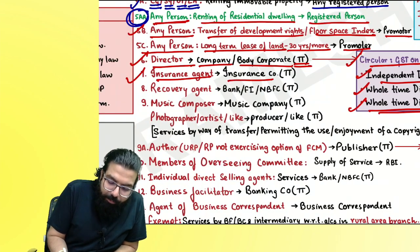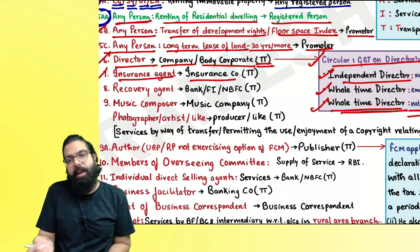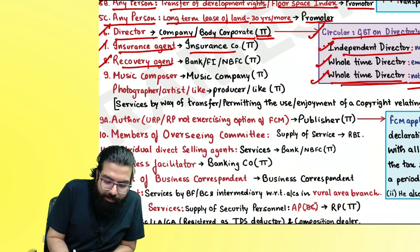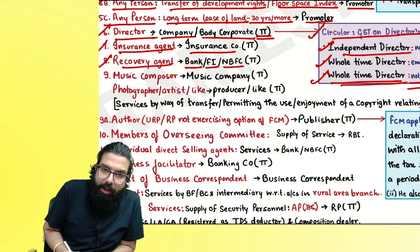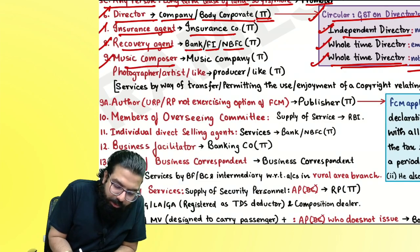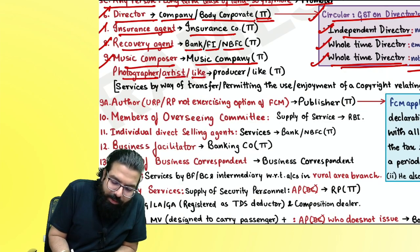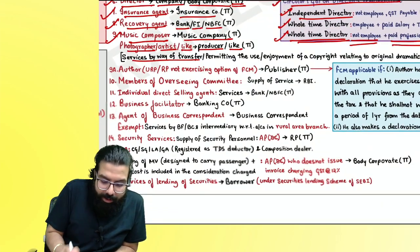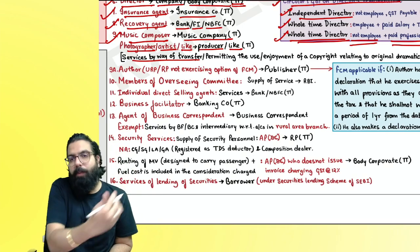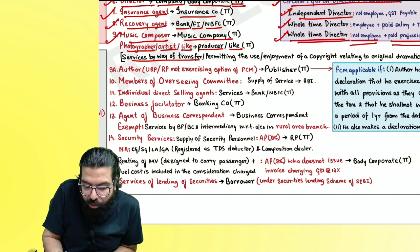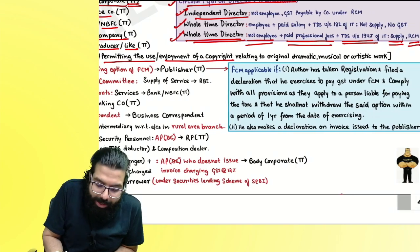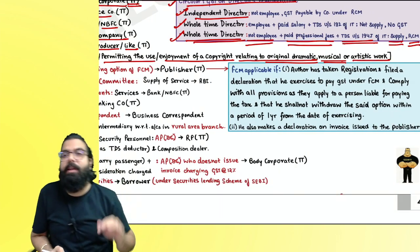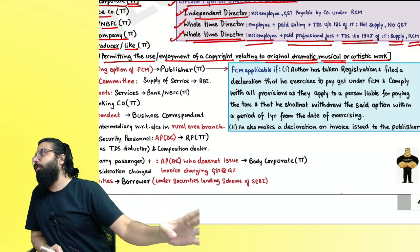Insurance agent giving services to an insurance company — RCM applies. Recovery agent giving services to a banking company, financial institution, or NBFC — RCM applies. Music composers, photographers, or artists giving services by way of transfer of copyright or permitting use or enjoyment of copyright relating to original dramatic, musical, or artistic works to a music company or producer — the music company or producer pays GST under RCM.